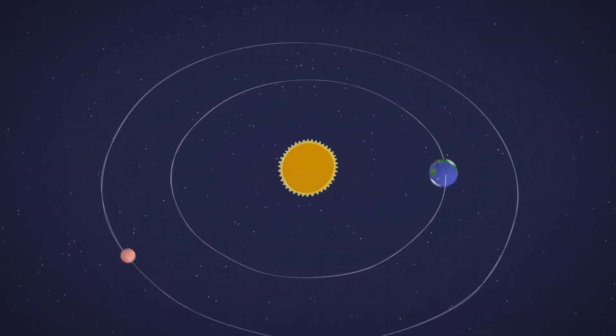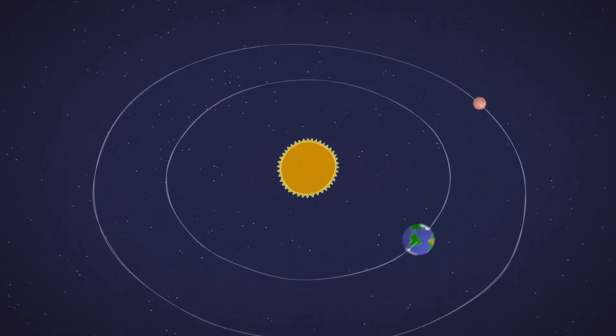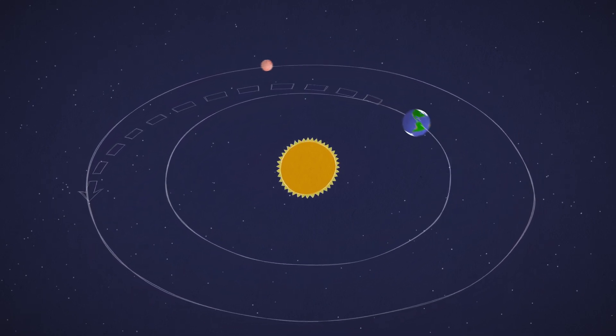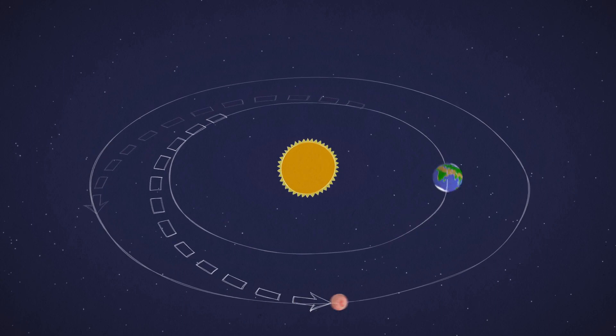The timing of Mars years is also important. Every 26 months, we come closer to Mars, so it's one of the best times to send spacecraft. A shorter trip means less time and fuel spent getting there.